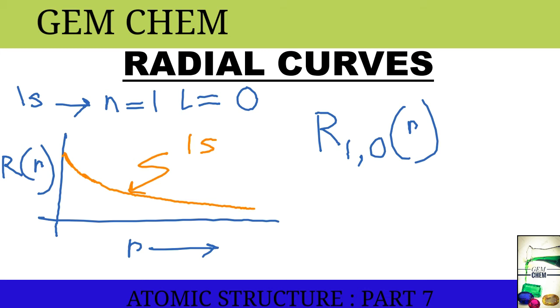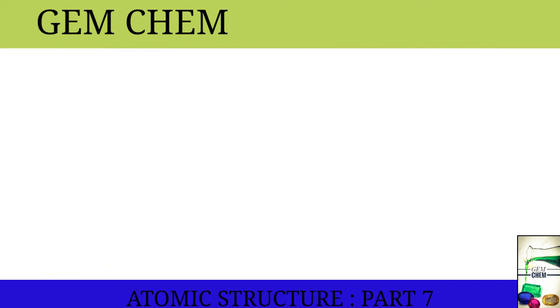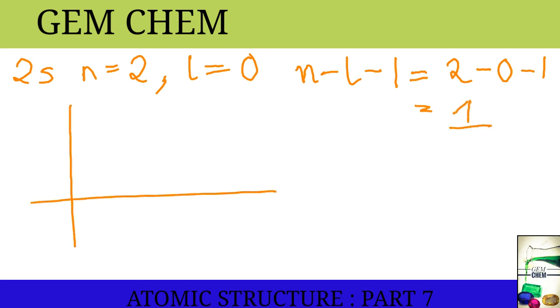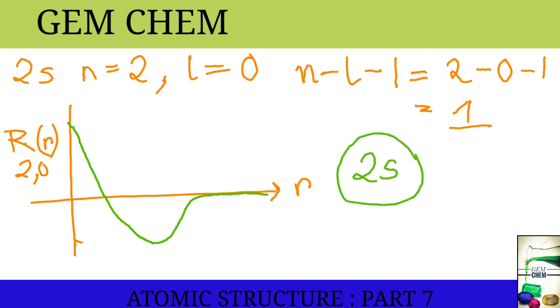If we consider for 2s orbital, for 2s orbital, we have n equal to 2, l equal to 0. And number of nodes will be n minus l minus 1. That is 2 minus 0 minus 1. So, there will be one node. The curve is like this. It starts from this part, goes down and exponentially increases and then continues. This is our curve for 2s radial curve.